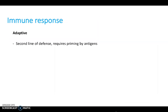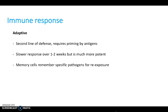The adaptive immune response is our second line of defense and requires priming by antigens. It's a slower response, taking one to two weeks to get going, but it's much more potent. Memory cells from the adaptive system can remember specific pathogens for re-exposure in the future, which is why we rarely suffer from certain diseases more than once — for example, chickenpox.